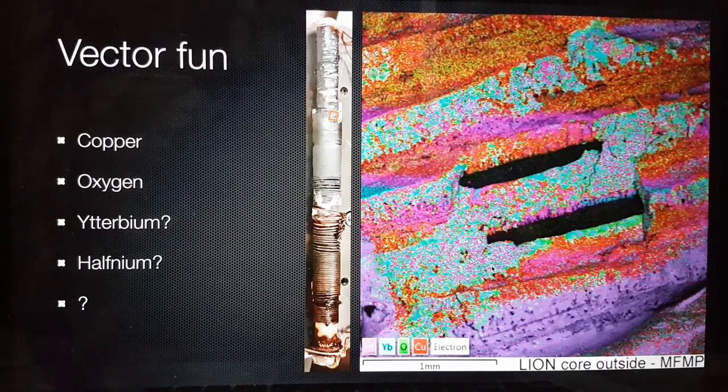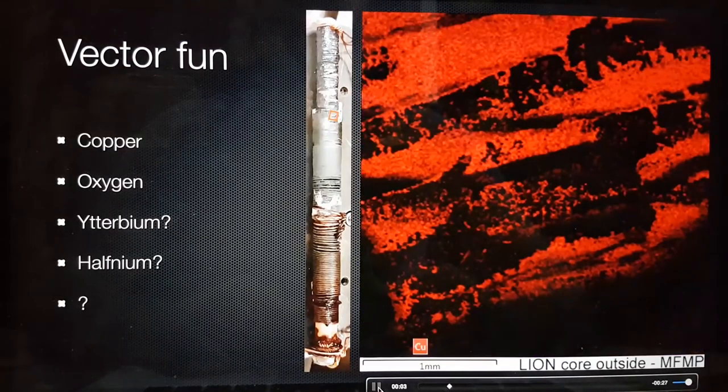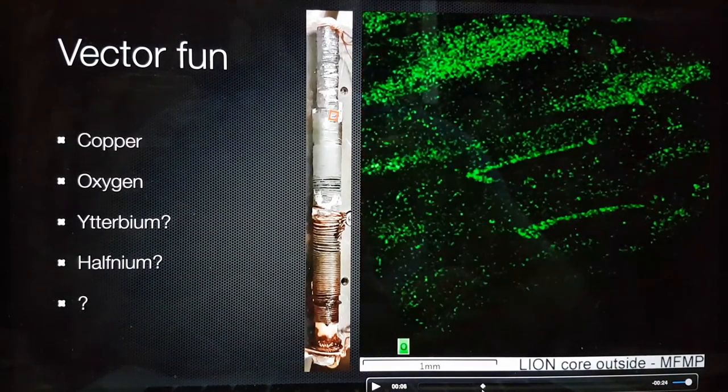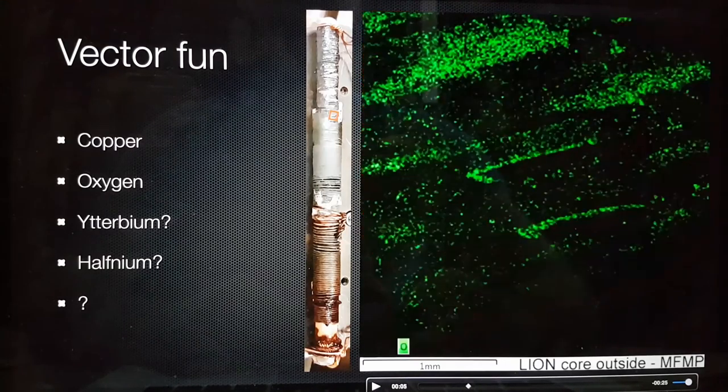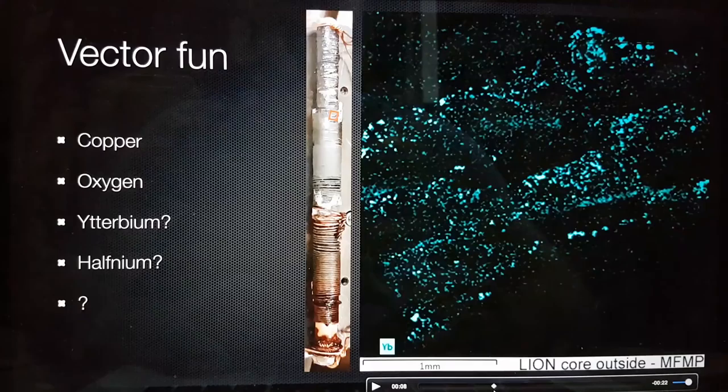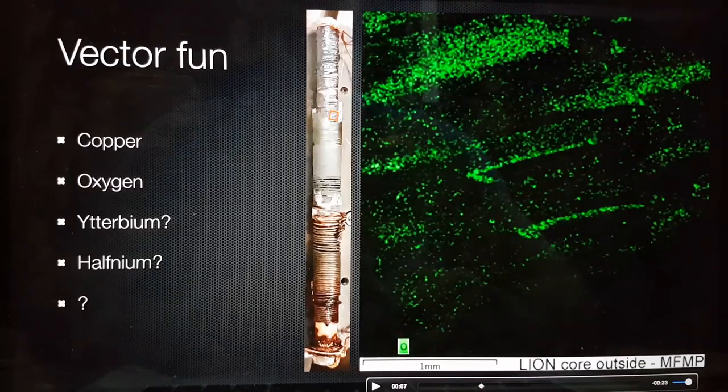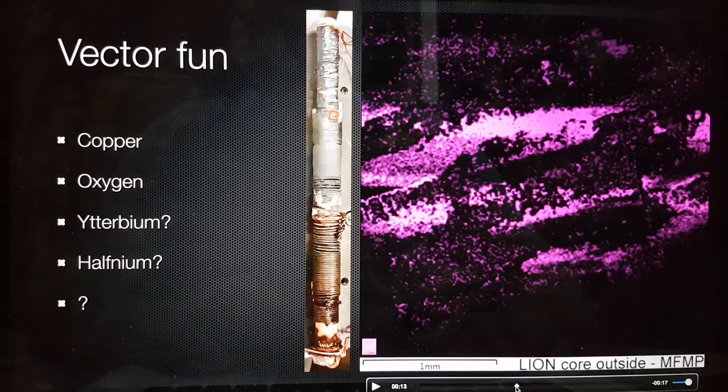They detected as things that were only closest matched by ytterbium and hafnium. And if I just go through this, you can actually see that they're very distinct areas. So the copper here, the oxygen here. So the copper and oxygen are reasonably co-located. But then it comes to the ytterbium. That's in a different place to the copper and the oxygen. And we look at the hafnium. And that's very, very distinct.